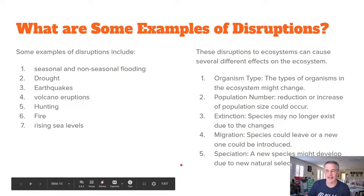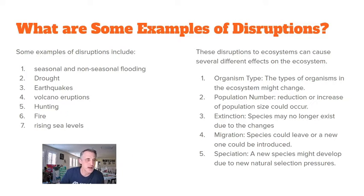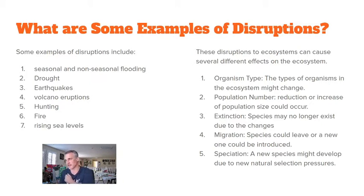A couple quick examples of disruptions include seasonal and non-seasonal flooding, drought, earthquakes, volcanic eruptions, hunting, fire such as a wildfire, and rising sea levels. Those are just a small sampling of different types of disruptions — there are others as well. This is not a comprehensive list.